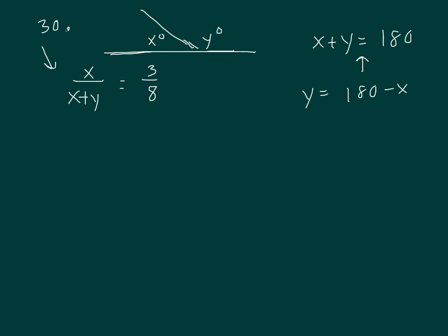Everywhere there's a y in this equation, let's substitute 180 minus x. So it will be x over x plus, now what's y? 180 minus x, and that equals 3 eighths. That would be x over 180 equals 3 eighths.